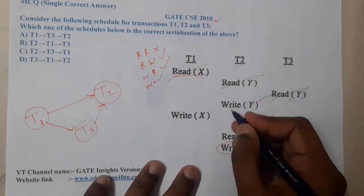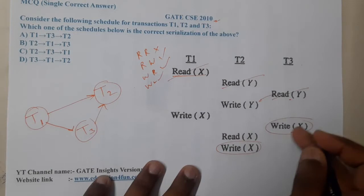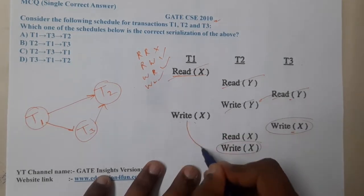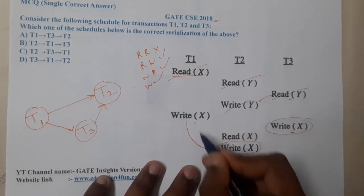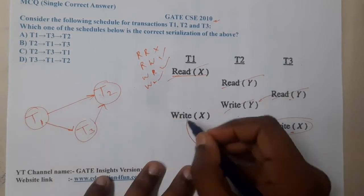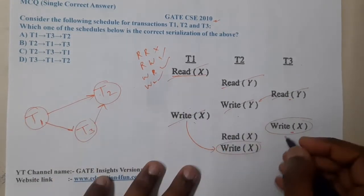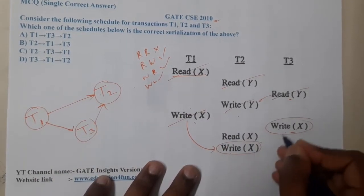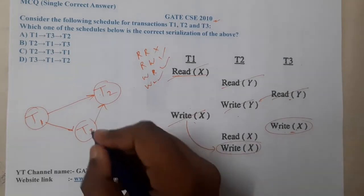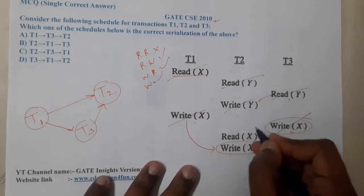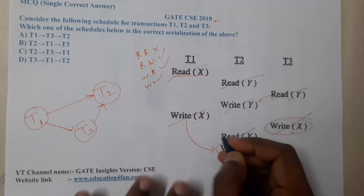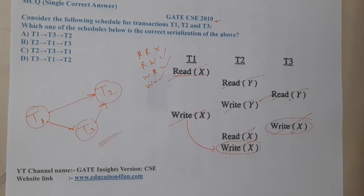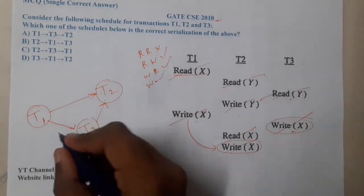Write of Y has no further issue. Write of X versus write of X gives T1 to T2, but that edge is already covered. Write of X versus write of X for T3 to T2 is also already available. So the precedence graph is complete.